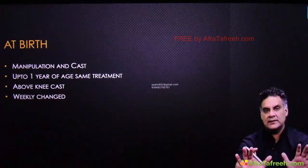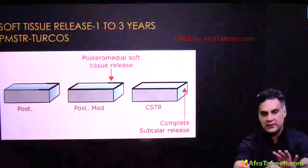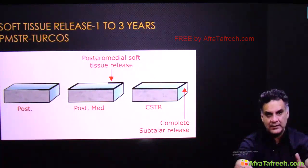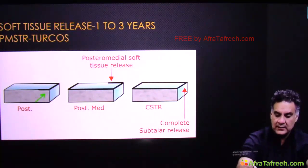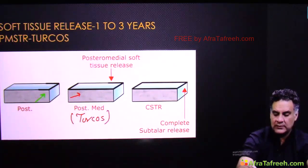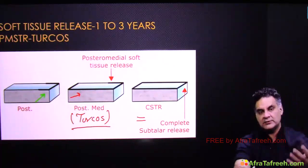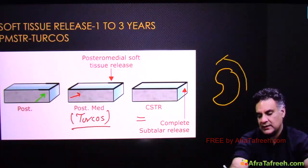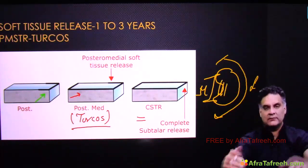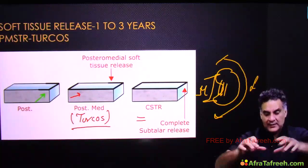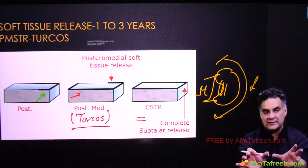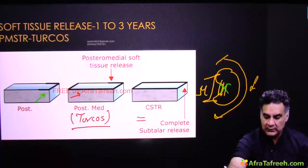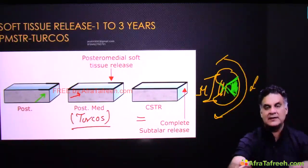Manipulation and casting should continue until correction, possibly up to one year. Cast should be above the knee joint. After one year, between ages one to three, if casting does not help or the child presents late, you release the soft tissues — posteriorly, post-medial soft tissue release defined by Turco, the most common release, or complete subtalar release beyond three years. In CTEV the foot is bean-shaped with a large lateral border and tight medial structures. When correcting, push at the head of talus, open the medial side, and apply a cast up to one year. Between one and three years, release the tight tissues.